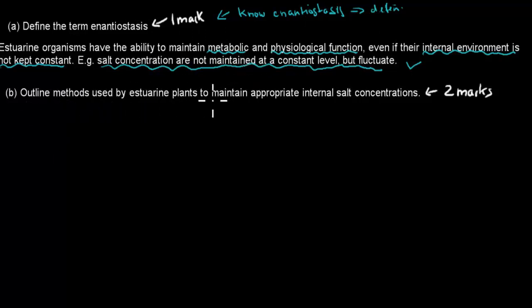The second part asks to outline methods used by estuarine plants to maintain appropriate internal salt concentrations. First it would be good to name some of the plants, and then obviously name what methods, so what are the main points of the methods they use. Name responses or adaptations to maintain constant salt concentrations.